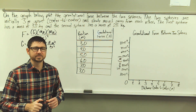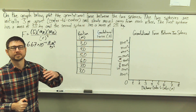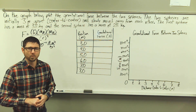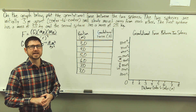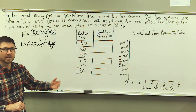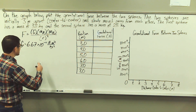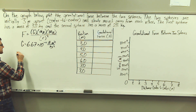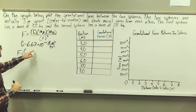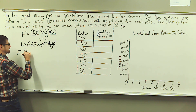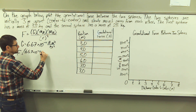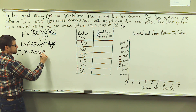The problem tells us that the spheres are three meters apart, center to center. One mass is 28 kilograms and the other mass is 38 kilograms. So let's go ahead and plug in some values here. We're calculating the force of gravitational attraction using our universal gravitational constant: 6.67 times 10 to the negative 11th newton meters squared per kilogram squared.